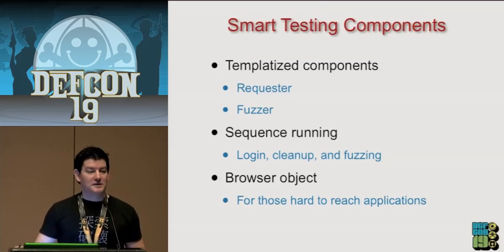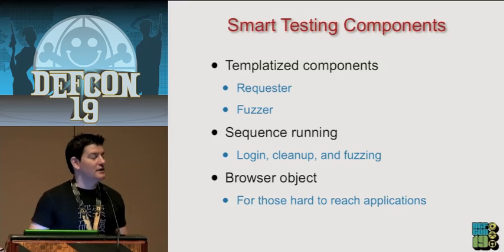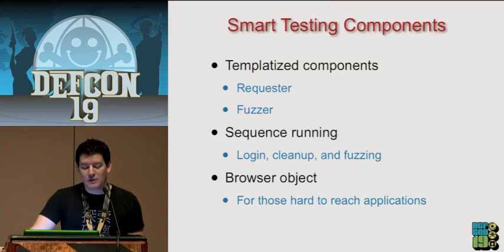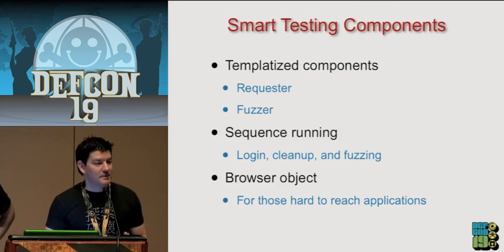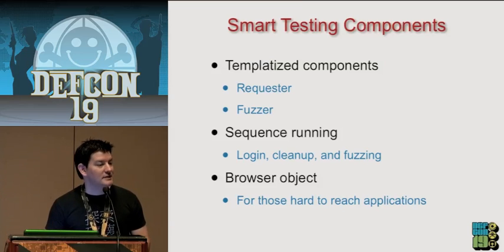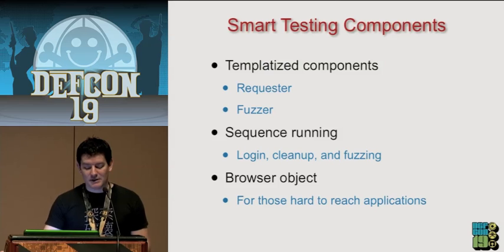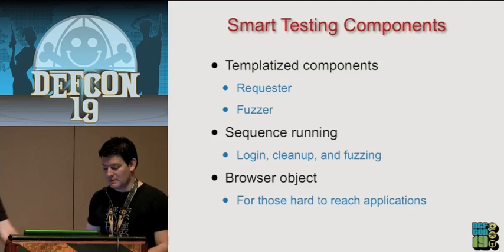A little bit about our smart testing components. So far we've been talking about data you've already collected. Now you want to do additional testing based on that data. We created a requester and a fuzzer — those are templatized. We also have the ability to run sequences: you can launch the sequence builder, build your sequence, and then select it from a dropdown when doing your testing. And of course we have a browser object that can be utilized during testing.